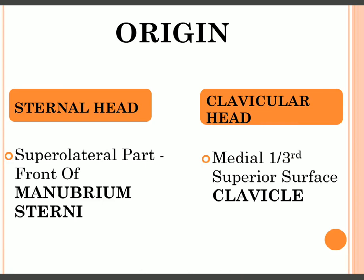The two heads are the sternal head and the clavicular head. In anatomy, 'cleido' is used for clavicle. The sternal head takes origin from the manubrium sterni — specifically the superior lateral front of the manubrium sterni — and the clavicular head takes origin from the medial one-third superior surface of the clavicle.